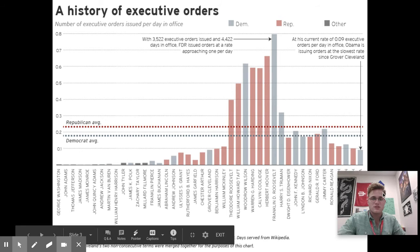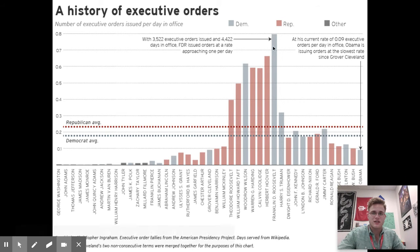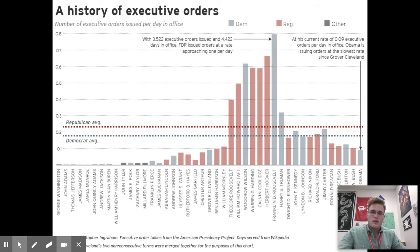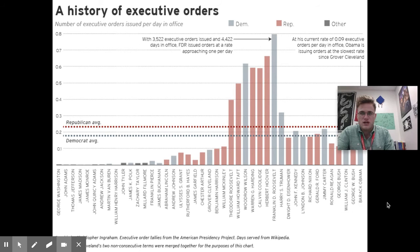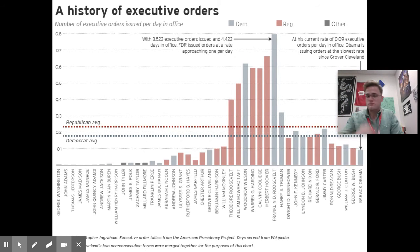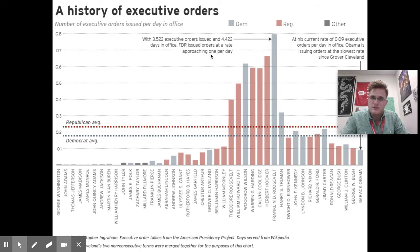Historically, the president who issued the most executive orders is Franklin Delano Roosevelt, during the New Deal and the Great Depression. At that time, executive orders were needed because Congress was not meeting or being effective enough, or the other political party controlled Congress. Obama issued the fewest executive orders at the time of this graph's publication. Trump issued around 182 total executive orders, which is not the highest compared to Roosevelt's 3,522.